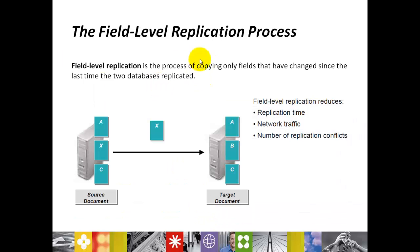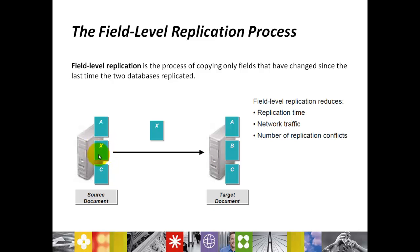Field level replication. For example, I have three fields on one server and three fields on another server. Field level replication is a process of copying only the fields that have changed since the last time the two databases replicated. Field level replication reduces replication time, network traffic, and the number of replication conflicts. If I delete one field, the replicator looks for exactly what change was made, and only that change is replicated to the target server.